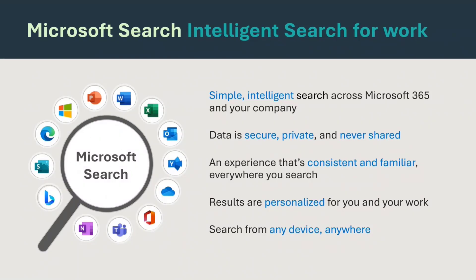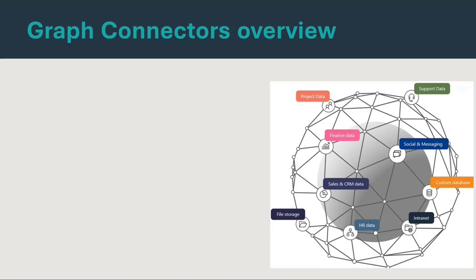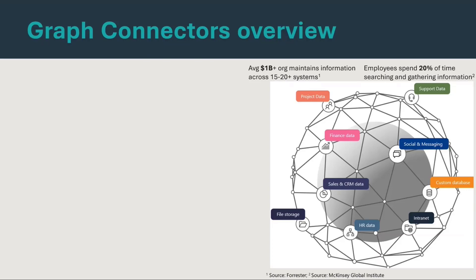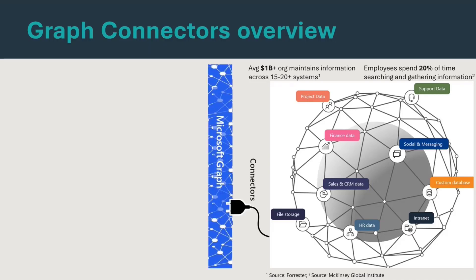How does Graph Connectors play a role in Microsoft Search? Initially, all your first-party content — like your PowerPoint, Word, Excel, Outlook, Teams data — everything is already there in Microsoft Graph. But let's say you have other content as well. That's where Microsoft Graph Connectors come in. In a modern organization, you would have tons of data spread across file storage, sales and CRM data, HR data, or on-prem data sources. Average large organizations have 15 to 20 plus systems, and employees spend roughly 20% of their time searching and gathering this information. Discovering information across so many systems is difficult, let alone analyzing and using it.